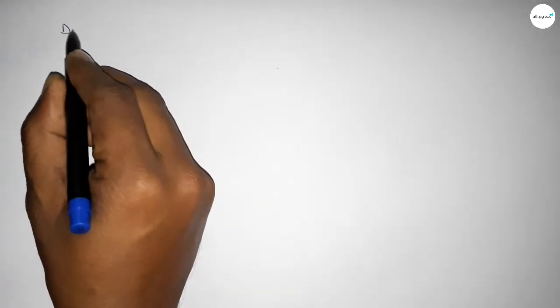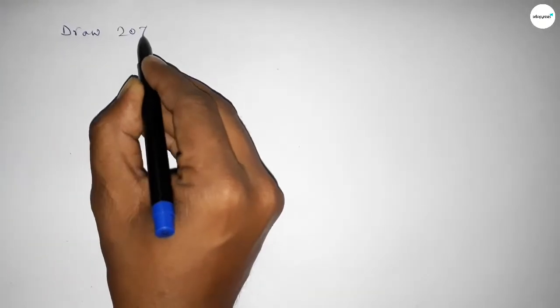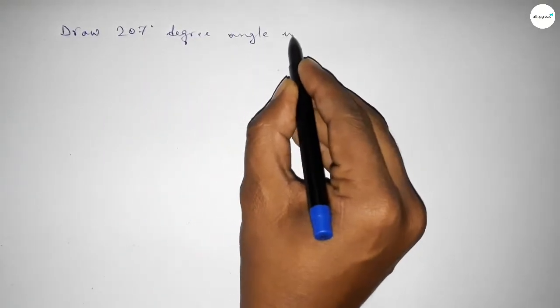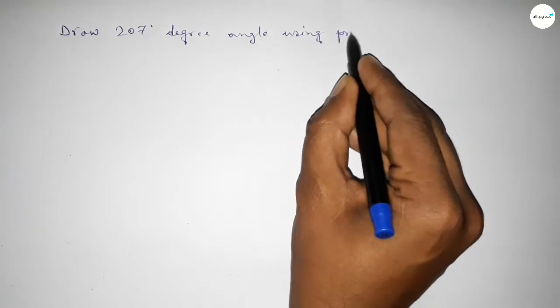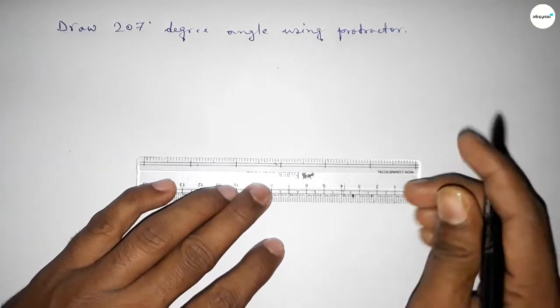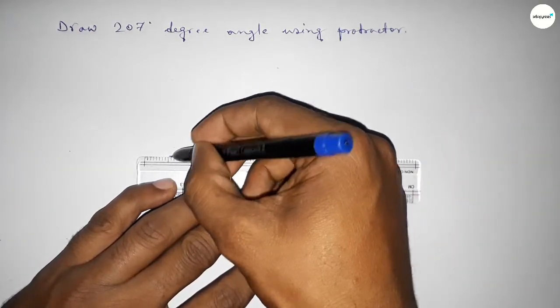Hi everyone, welcome to Size Share Classes. Today in this video we have to draw a 207 degree angle using a protractor. So let's start the video. First of all, we have to draw a straight line of any length and mark points B and C here.